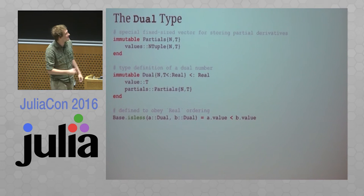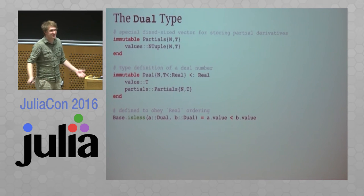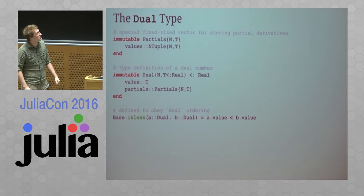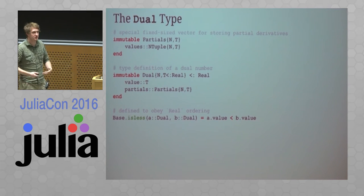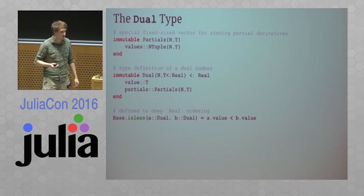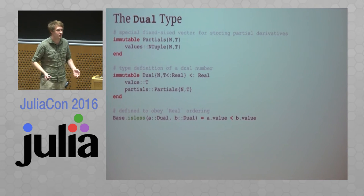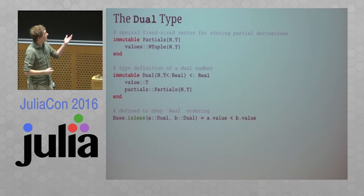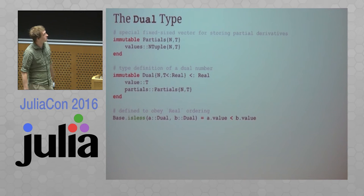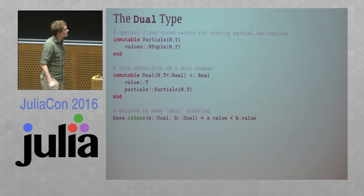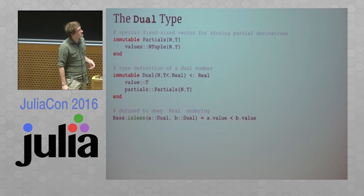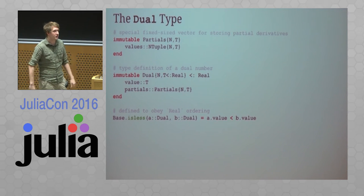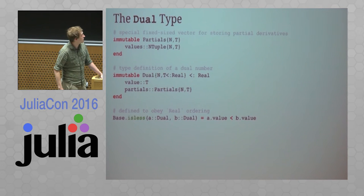You'll notice that I subtype this to Real, which was kind of a controversial decision originally, because dual numbers are not mathematically a subset of the real numbers. But programmatically what we really want is to be able to drop dual numbers into a program wherever real numbers would feel comfortable being. So we need to make sure we obey the real interface — Julia's base real interface — in a way that doesn't change the semantics of the program we're working with, other than accumulating derivative information. To give an example, I've overloaded the less-than comparator, which allows dual numbers to propagate through branches of a program without interfering with how the program would normally branch.